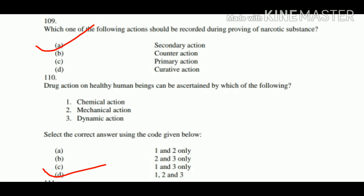Question number 110: Drug action on a healthy human being can be ascertained by which one of the following? Options: chemical action, mechanical action, dynamic action. Select the correct answer using the code given below. All three actions are to be considered, so Option D — 1, 2, 3 all are correct.